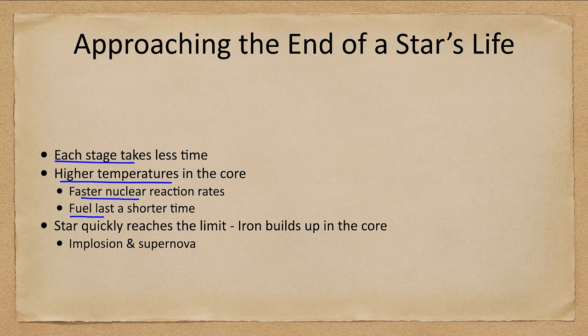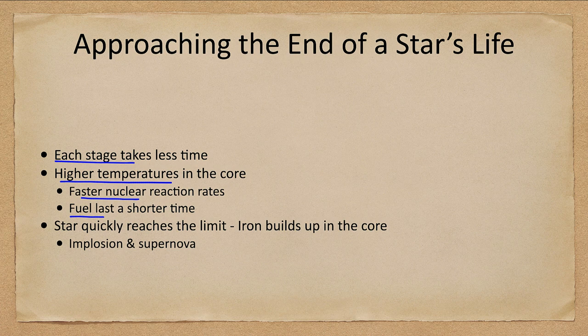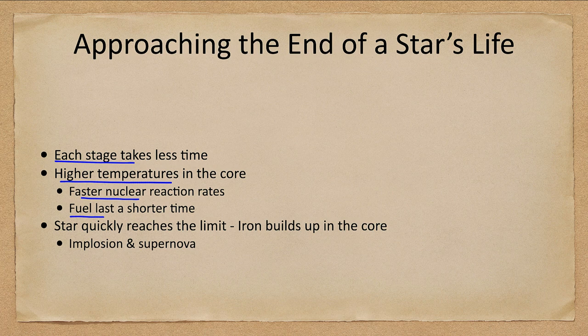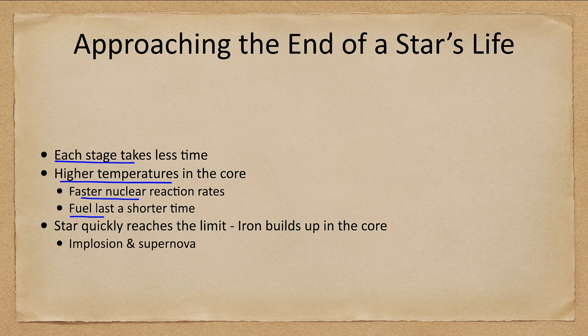So hydrogen fusion gets you a lot of energy and the reaction rates are relatively slow. Each helium to carbon reaction gives you a lot less energy and so you need a lot more of them, higher temperatures, a lot more reactions. It takes a lot more reactions to give you the amount of energy needed to support the star against gravity.